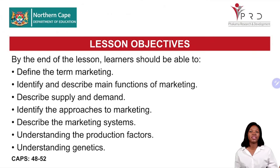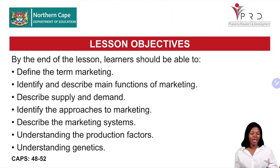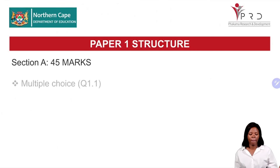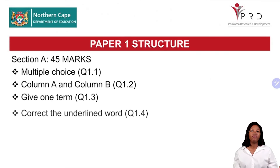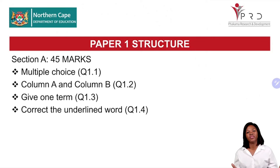By the end of this lesson, you should be able to define the term marketing, identify and describe main functions of marketing, describe supply and demand as affected by price, identify the approaches to marketing, understand the production factors, and understand genetics.